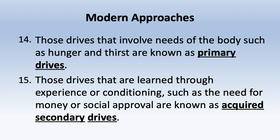Drives involving needs of the body — such as hunger and thirst — are known as primary drives. Those learned through experience or conditioning — such as the need for money or social approval — are acquired secondary drives. This parallels the behavioral distinction between primary and secondary reinforcers: secondary drives are conditioned and associated with primary drives through experience.